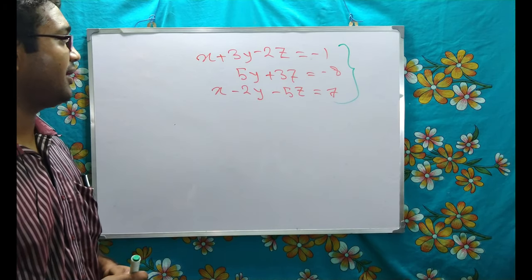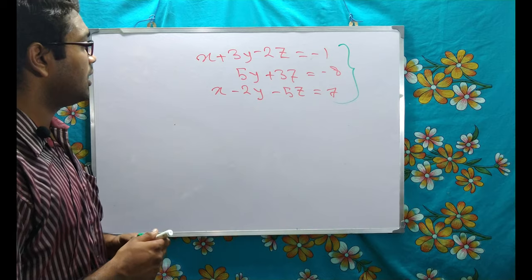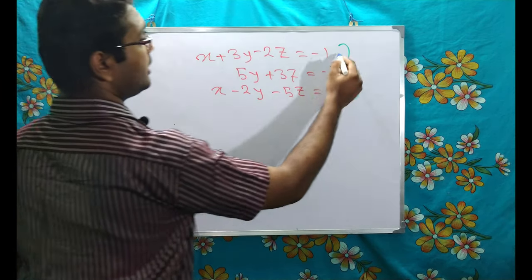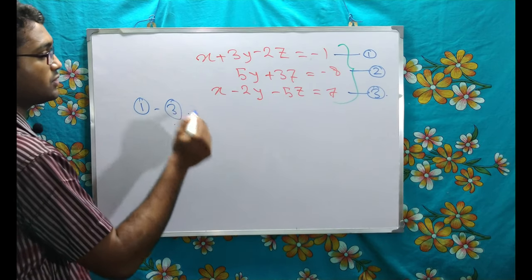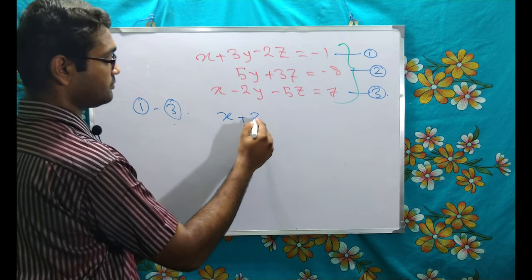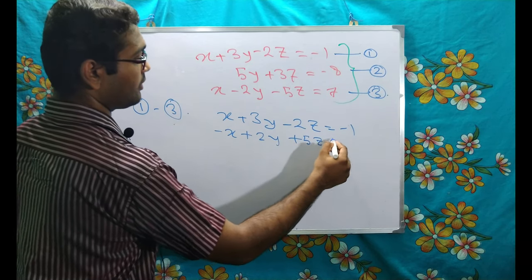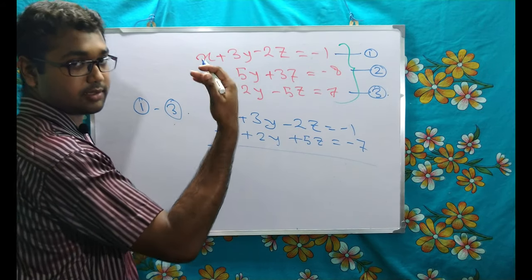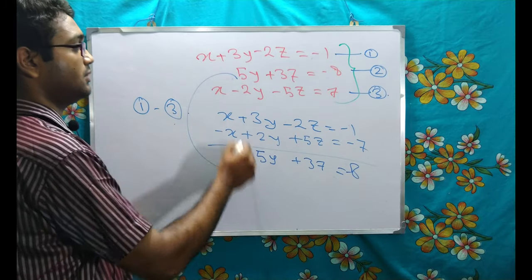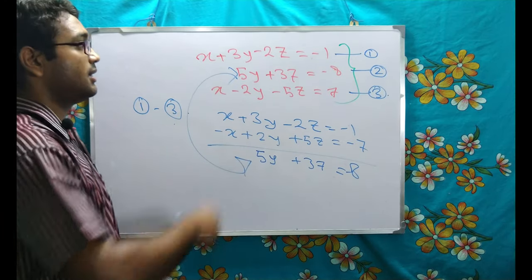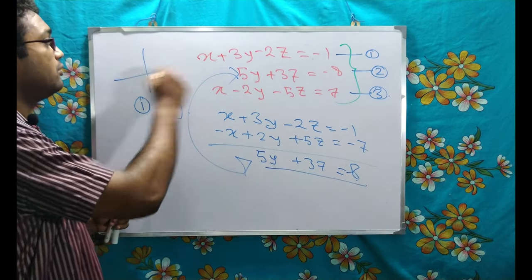Let me number the equations 1, 2, 3. If I subtract equation 3 from equation 1, I get: x and -6y, with the z terms. The result and equation 2 (5y + 3z = -8) turn out to be the same form. This means these three equations actually represent only a single plane equation — all three are essentially the same plane.